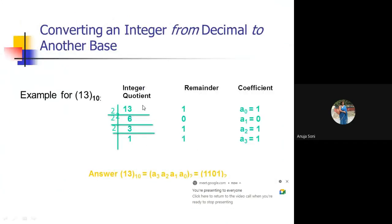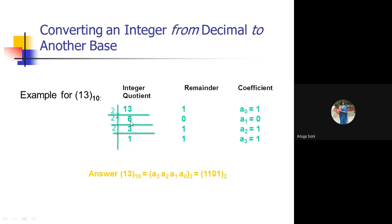So what we have to do: we have to divide 13 by 2 successively till we get the value of the quotient as 0 or 1. Even if you get 1, you can stop the process, but this last value of the quotient will be used as part of your remainder ultimately. When 13 is divided by 2, it gives quotient 6 and remainder 1. When 6 is divided by 2, it gives quotient 3 and remainder 0, placed on the right-hand side.